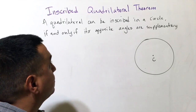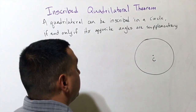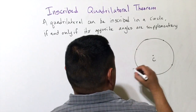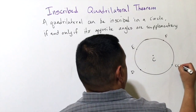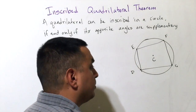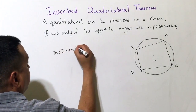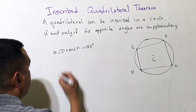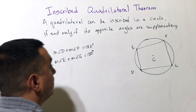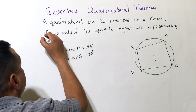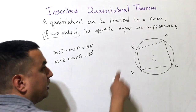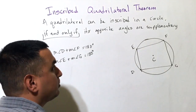Now the Inscribed Quadrilateral Theorem states that a quadrilateral can be inscribed in a circle if and only if its opposite angles are supplementary. So if four points D, E, F, G lie on the circle, then the measure of angle D plus the measure of angle F equals 180 degrees, and the measure of angle E plus the measure of angle G equals 180 degrees. Since it's an 'if and only if,' if the opposite angles are supplementary, you know the quadrilateral is inscribed in a circle.